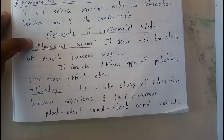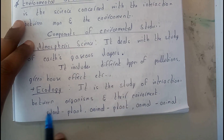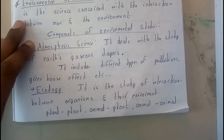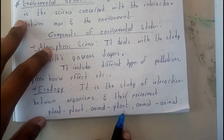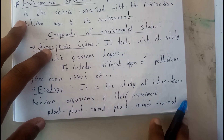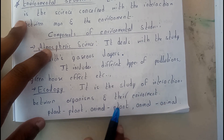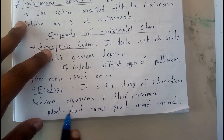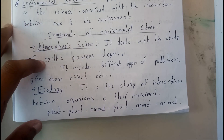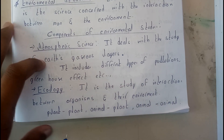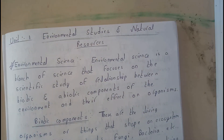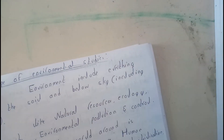Ecology is the study of interaction between organisms and their environment. These interactions include plant to plant, animal to plant, and animal to animal. The study of these interactions is called ecology. I hope everyone is clear with the first section of the introduction, so let's continue with environmental pollution.